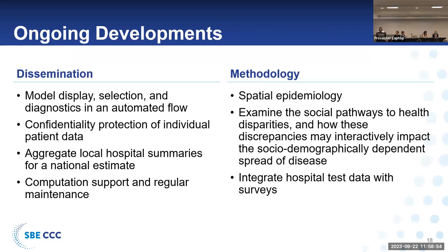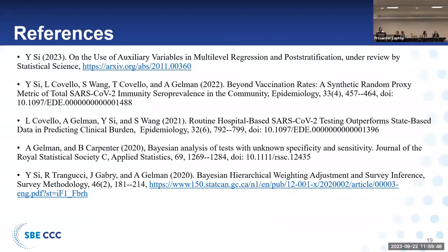We are currently in the data dissemination stage. We want to make sure we protect the confidentiality of patient records, especially with five-digit zip codes. We are trying to get more hospitals to implement our interface so that we can aggregate local hospital estimates toward a national-level estimate. This interface will be maintained and regularly updated. In terms of methodology, we will focus on social pathways to health disparity, especially looking at different trends across social groups, and harmonize this hospital test data with survey data. This is the list of papers we have published around this MrP adjustment procedure for data quality.